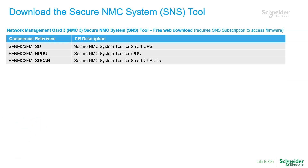Now moving on to step-by-step instructions for using the Secure NMC System Tool. Step 1: Download the Secure NMC System Tool from the APC or Schneider Electric website. The following commercial references are available for you here to download the tool. Note that there are different versions of the Secure NMC System Tool depending on the application you are running on your NMC3. Select the commercial reference and visit APC or Schneider Electric dot com and enter that into the search bar.